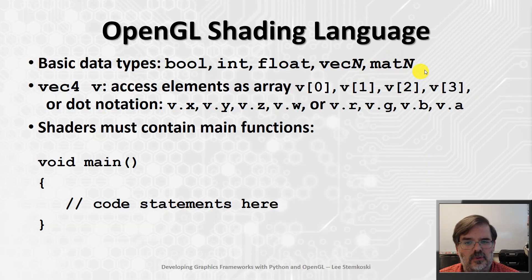The matrix data types, we'll have a lot to say about those later on. The matrix types often store transformations. Geometric transformations like translation, rotation, scaling, and projections. And there's other data types too. There's one called sampler, which represents textures. And we'll introduce those later on.